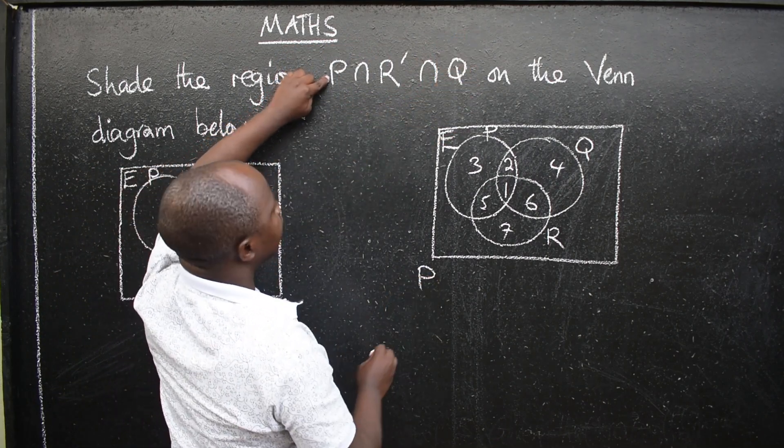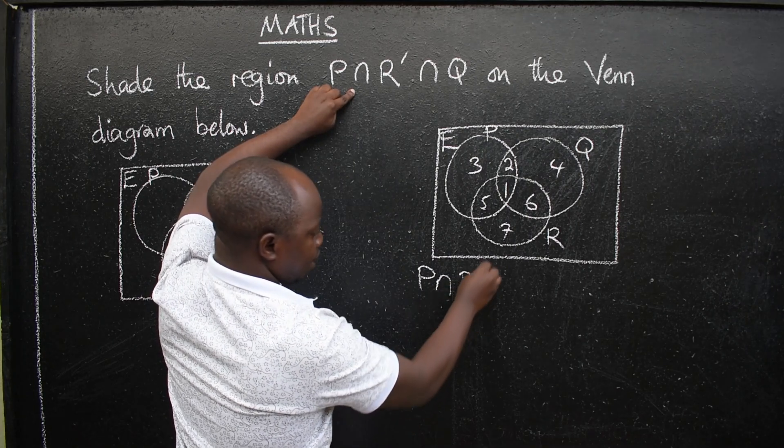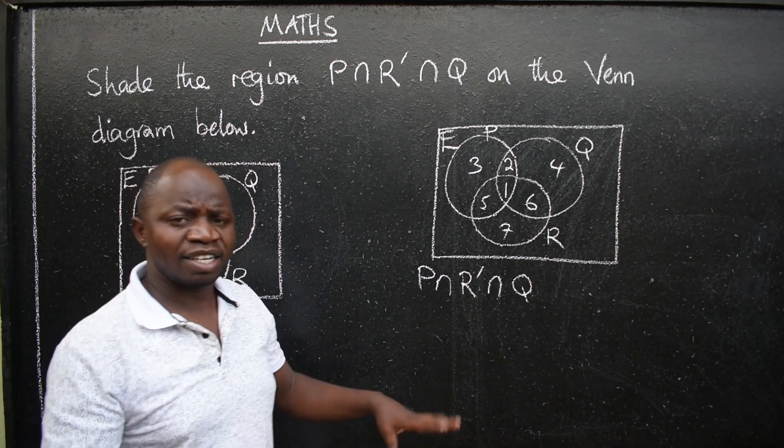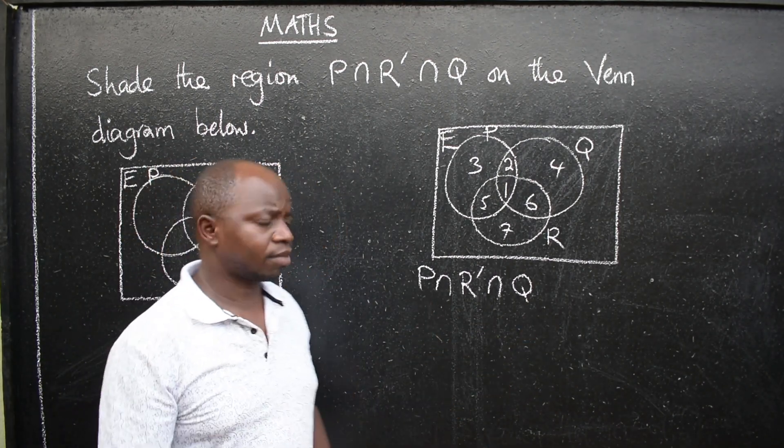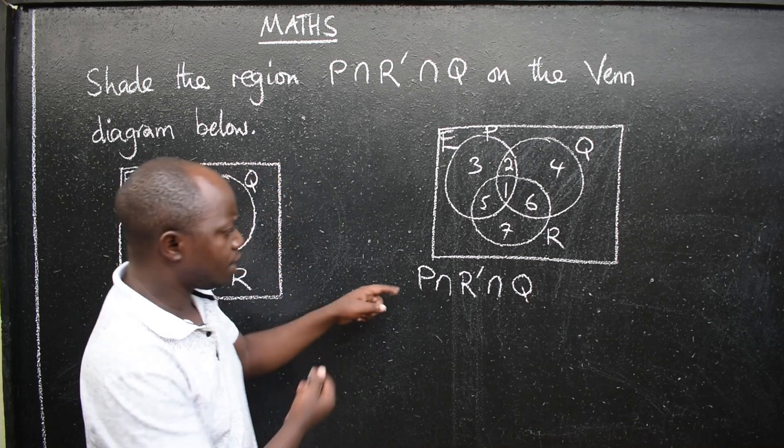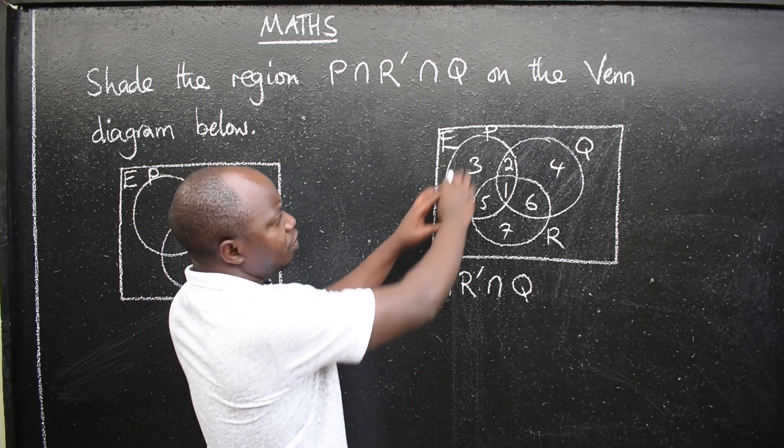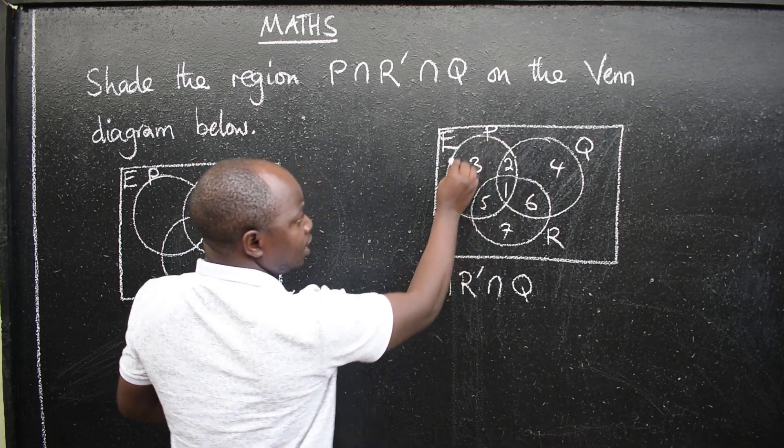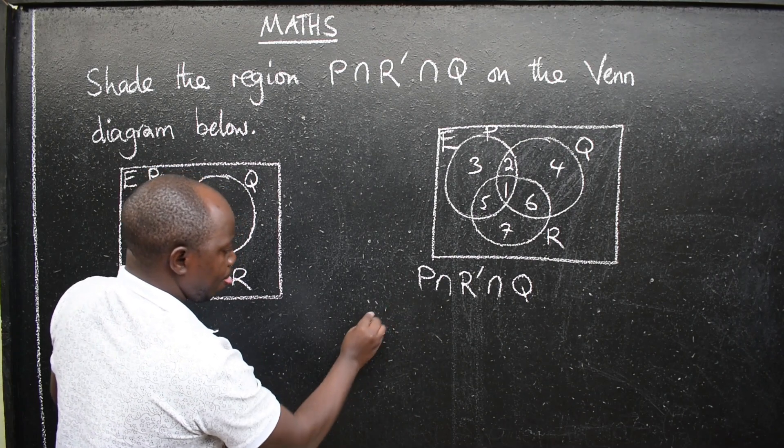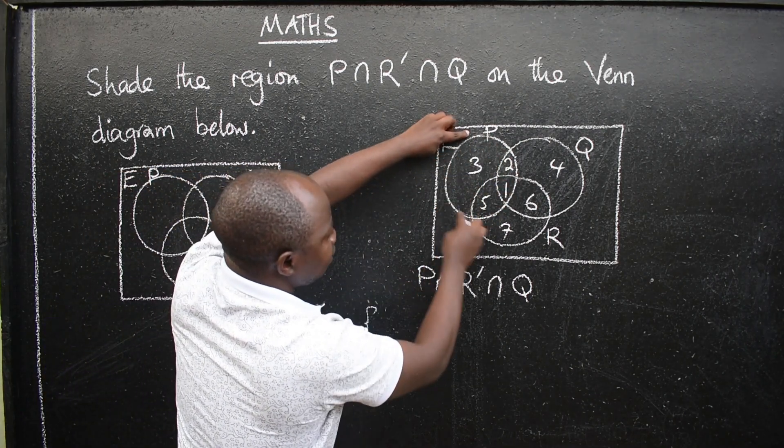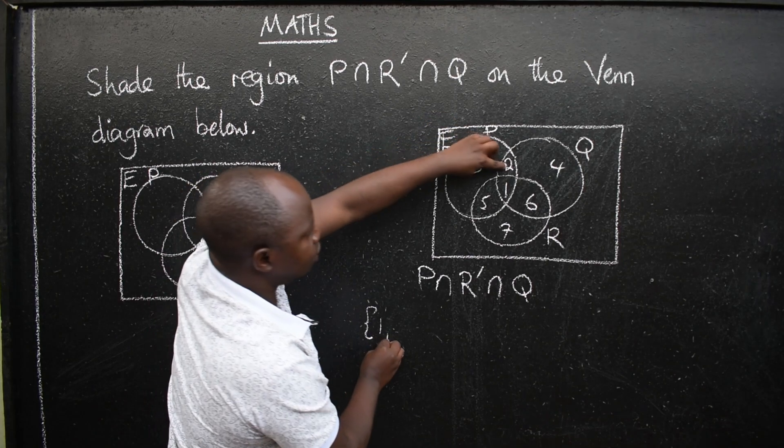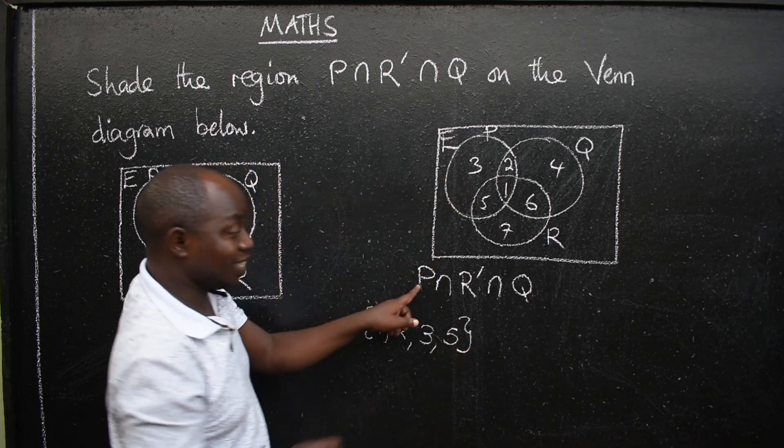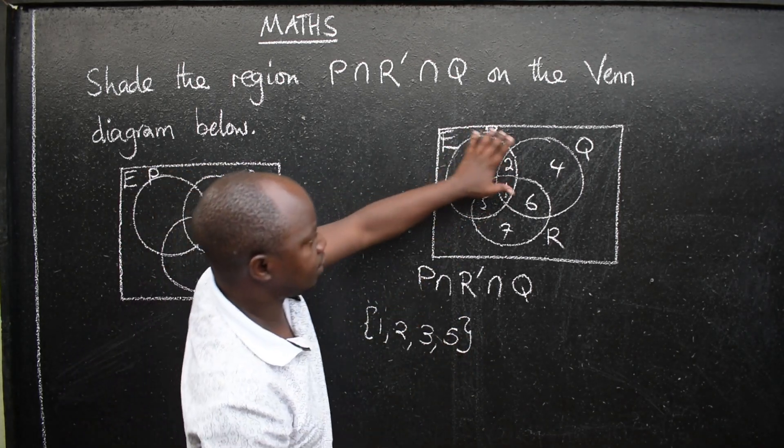Then you're going to get this notation, which is P intersection R complement intersection Q. You start solving it like you're solving an equation. So we are going to substitute. Where there's P, we are substituting with a set P. So here, this is set P. There's one, there's two, three, and five. That is set P. So you substitute this set here.